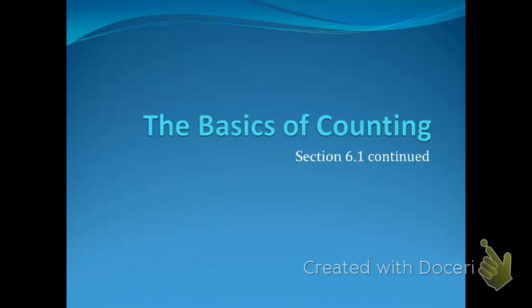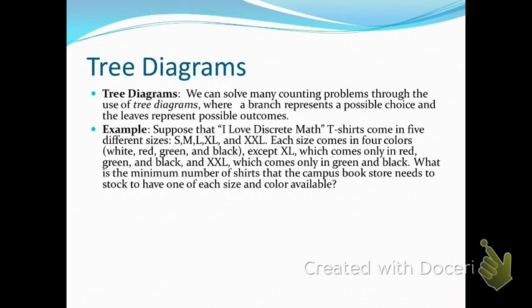We're going to continue looking at the basics of counting from our last section, then move on to 6.2. The last topic we're going to see is what we call tree diagrams. When looking at a tree diagram, we want to look at all the possible choices to represent an outcome. We create a tree diagram where the branches represent the possible choices and the leaves are all the possible outcomes.